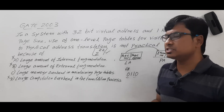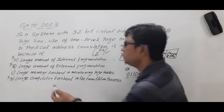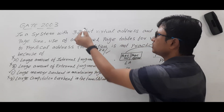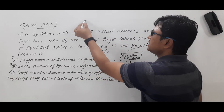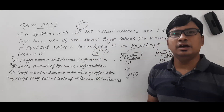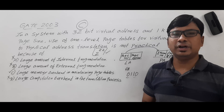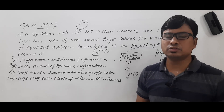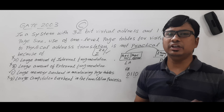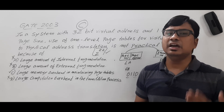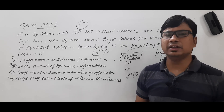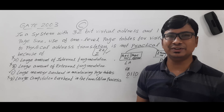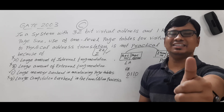So option C is correct — because there are 2^22 pages, maintaining them in a single page table requires a large amount of memory. Therefore, for this question, option C is the right answer. I hope you have understood how I solved this question. If you still have any doubts related to this concept, feel free to ask in the comment section — I will try to clear your doubts as early as possible. Thank you for watching the complete video, have a nice day.